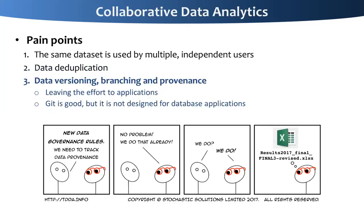The third pain point is about data versioning, branching, and provenance. Most applications leave this effort to the application layer for development, and this is not going to be cross-application applicable. We want to use a protocol to support these properties, and Git is a good candidate, but it is not designed for database applications.